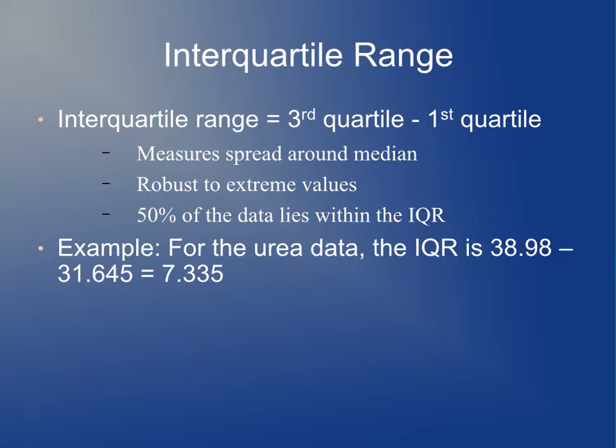Another statistic you should be aware of is the interquartile range, which is defined to be the difference between the third quartile and the first quartile. So you can think of it as measuring the spread around the median. Like the median and quantiles themselves, it's robust to extreme values. By definition, 50 percent of the data always lies within the interquartile range. For example, for the urea data, the interquartile range is going to be the difference between the 75 percent quantile, third quartile, and the first quartile. So about 7.3 in this case.